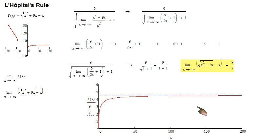If you graph the function over a long enough x interval, you can see that the function asymptotes to 9 over 2, or 4.5.